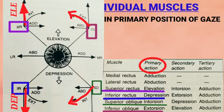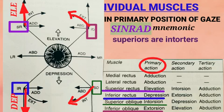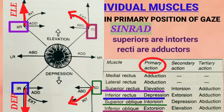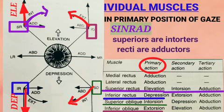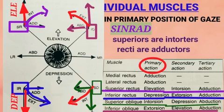To remember the secondary and tertiary actions, a mnemonic called SINRAD is used: SIN means all superiors are intorters; RAD means all recti are adductors. Using this mnemonic: superior rectus has elevation, adduction, and intorsion; inferior rectus has depression, adduction, and intorsion; superior oblique has intorsion, abduction, and depression; inferior oblique has elevation, abduction, and extorsion. Medial rectus has adduction only and lateral rectus has abduction only.